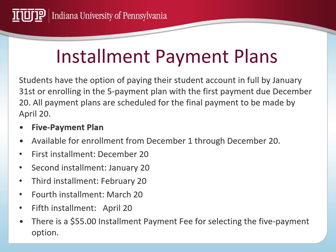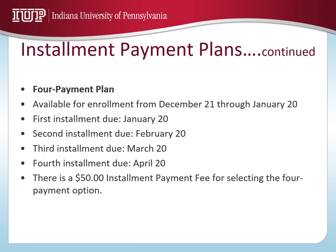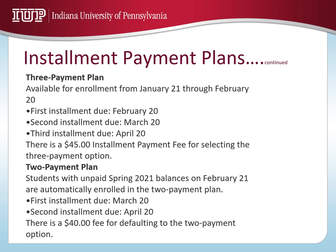There are four different payment plans available to students. The first is a 5-month plan running December through April with a $55 installment fee. The second is a 4-month plan beginning in January through April with a $50 fee. The 3-month plan begins in February through April with a $45 fee. Lastly, the 2-month plan begins in March with a final payment in April and a $40 fee. All payments are due on the 20th of each month.